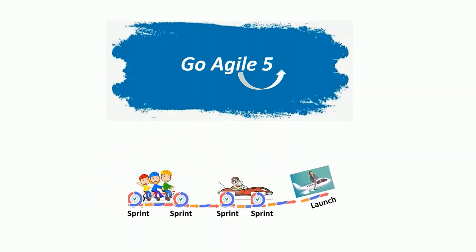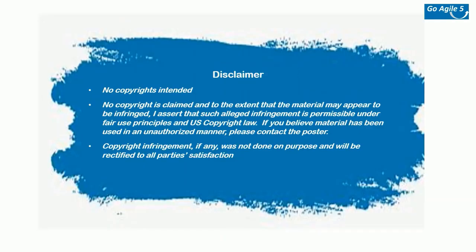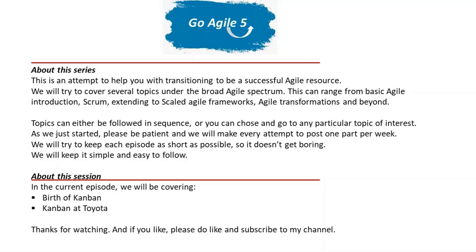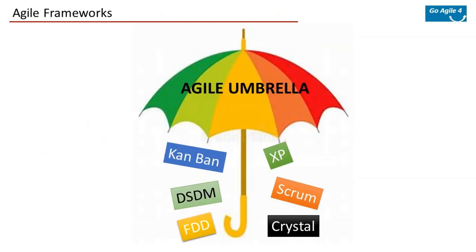Hello friends, hope you are doing well — welcome back to Part 5 of the Go Agile series. In the last part we reviewed the agile umbrella and the different frameworks generally categorized under it. Just wanted to clarify it's not limited to those frameworks we saw — it's just a representation. Kanban was one such framework we looked at as part of Go Agile 4.